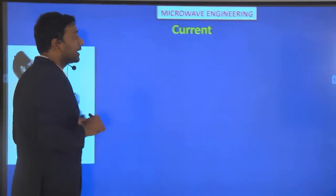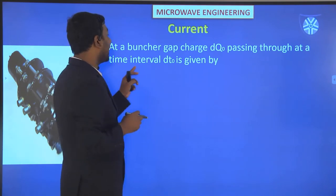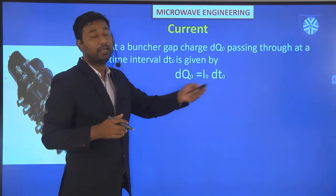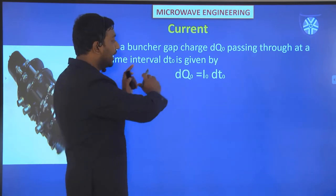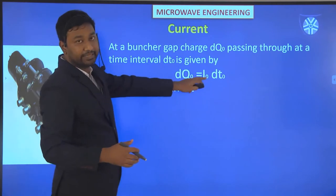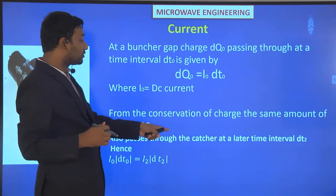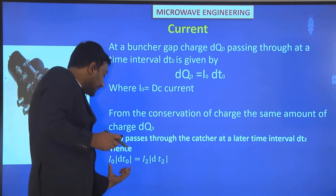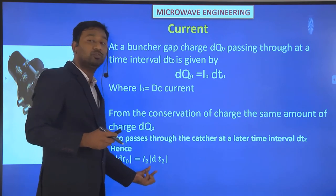Now we will calculate the current. At the buncher gap, charge DQ0 passing through at time interval is given by charge equals current times DT. By conservation of charge, whatever charge passes through one part, the same amount reaches the second part. The DC current is i0, and from conservation of charge, the same charge DQ0 also passes through the catcher at a later time interval DT2. Hence i0·DT0 equals i2·DT2.